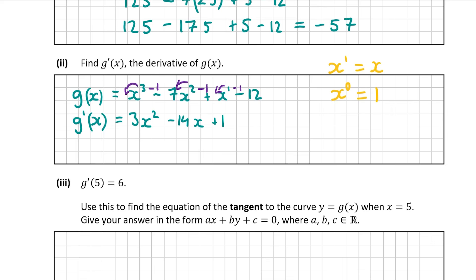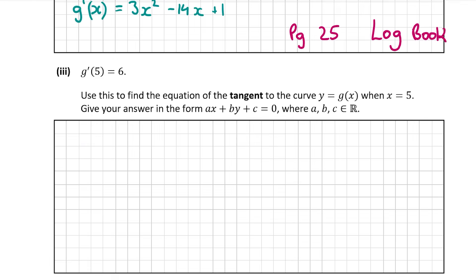You'll find these rules for differentiation in your formula and tables book on page 25. That's our answer for part A2. Now let's look at part A3, where we have to find the equation of the tangent to the curve when x is equal to 5.